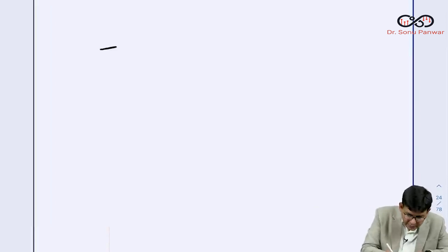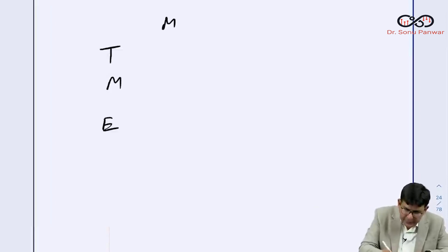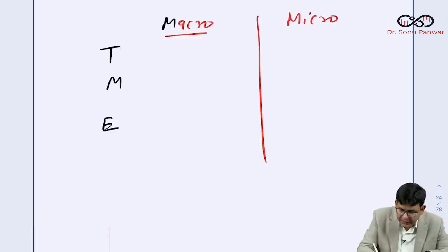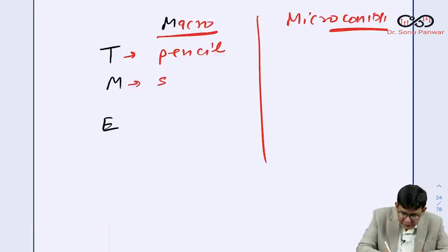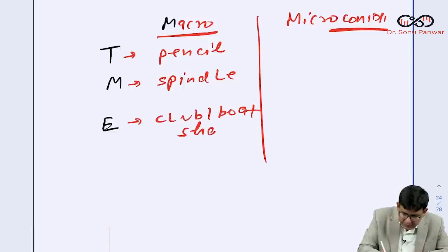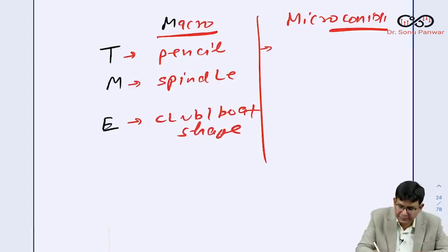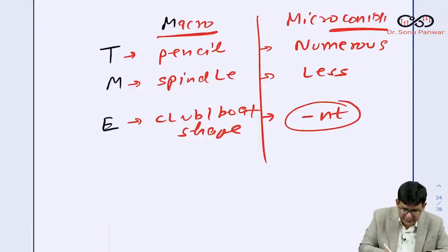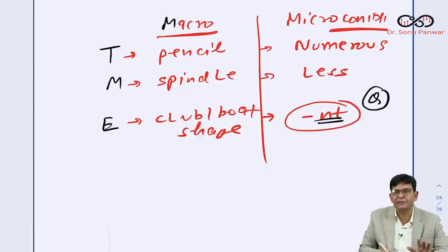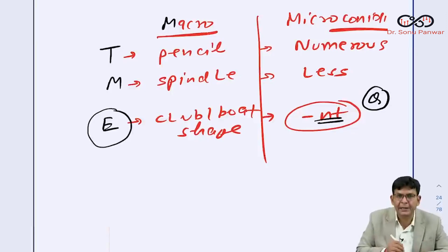To remember these, write TME — Trichophyton, Microsporum, Epidermophyton — and on one side write macroconidia and on the other side write microconidia. Conidia is a spore. For microconidia: Trichophyton has numerous microconidia, Microsporum has less, and Epidermophyton has absent microconidia.